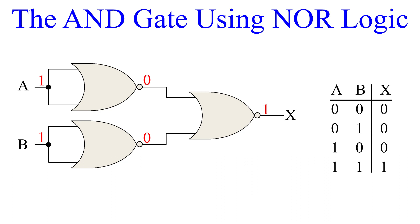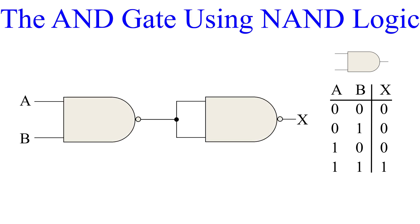You can now see the truth table is that of an AND gate. Now we're going to do the same with the NAND gate. This is very simple looking, and it should be. That second gate, which is our output, is just an inverter using a NAND gate. The NAND gate is the AND gate but inverted. So the first NAND gate outputs the inverse of an AND gate. The second NAND gate, acting as a NOT gate, flips the output back to that of an AND gate.